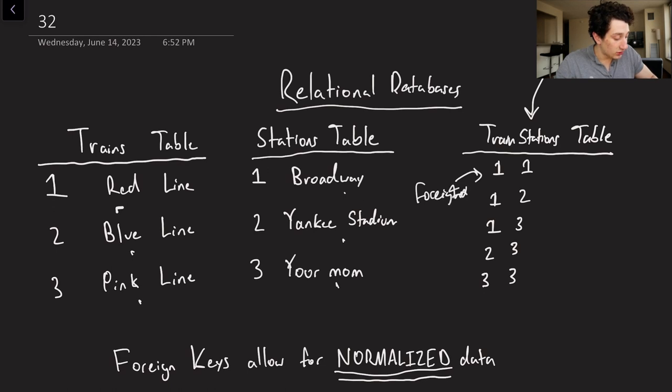Sorry for the siren, that's just Chicago for you. So we have foreign IDs and what those basically say for us is it creates the relationships between two rows of two different tables, or they could even be in the same table if we really wanted to. But basically this row right here is saying train with ID 1 at station ID 1. So it's saying that the red line stops at Broadway, and what this is called is normalized data because for each piece of data that we want to represent, we just put it in our tables once and then using foreign keys we can establish relationships between them.